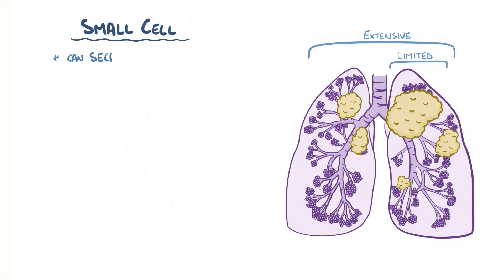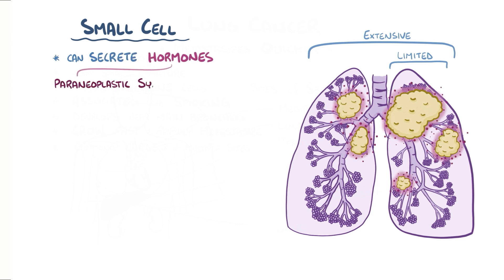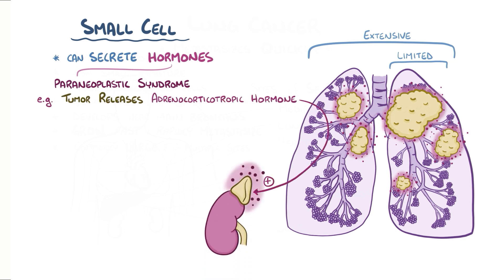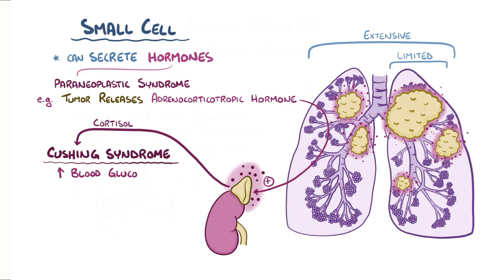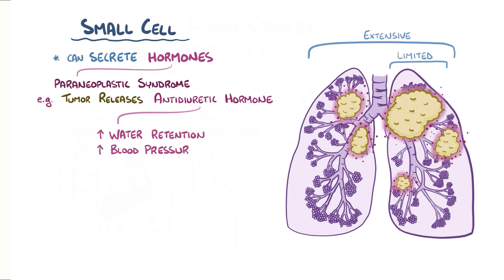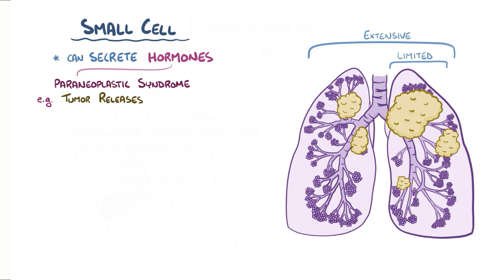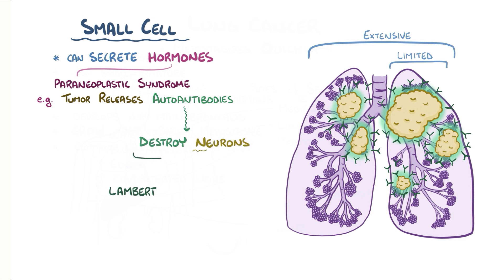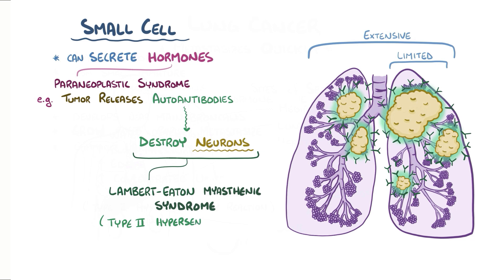Small cell carcinomas can also sometimes secrete hormones, leading to what's called a paraneoplastic syndrome. One example is when the tumor releases adrenocorticotropic hormone, causing increased production and release of cortisol from the adrenal glands — resulting in Cushing syndrome, with symptoms including elevated blood glucose and high blood pressure. Another example is when the tumor releases antidiuretic hormone, causing water retention, high blood pressure, edema, and concentrated urine. A different type of paraneoplastic syndrome occurs when the small cell carcinoma prompts the body to produce auto-antibodies that bind and destroy neurons, causing Lambert-Eaton myasthenic syndrome, a type 2 hypersensitivity reaction.